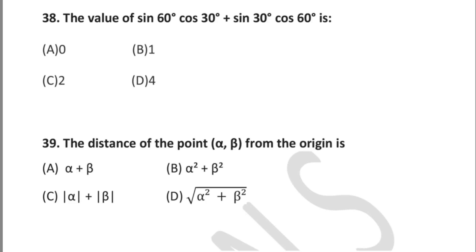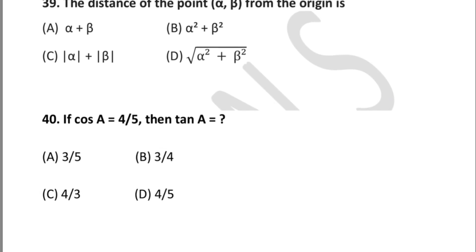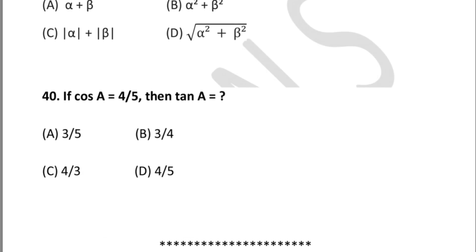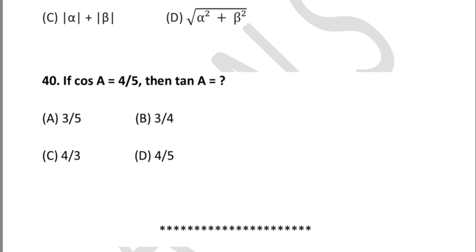The distance of a point from the origin uses the same formula regardless of variable names. Question 40: if cos θ = 4/5, then tan θ is equal to — option A: 3/5, option B: 3/4, option C: 4/3, option D: 4/5. This completes all 40 questions — the extra one can be considered a bonus question.